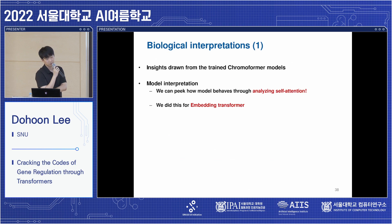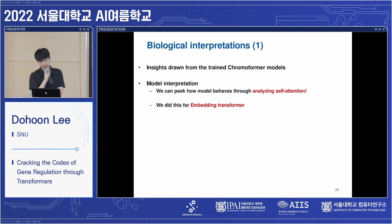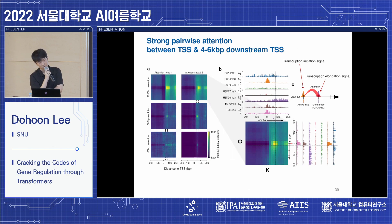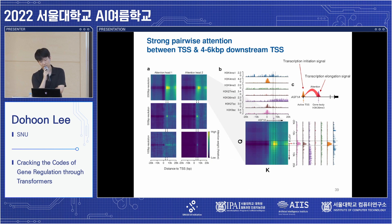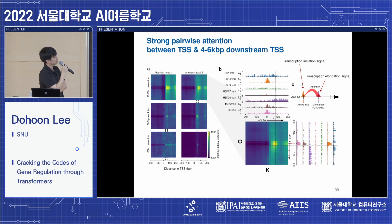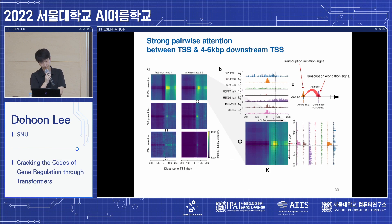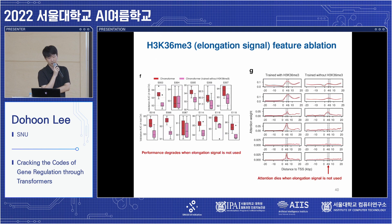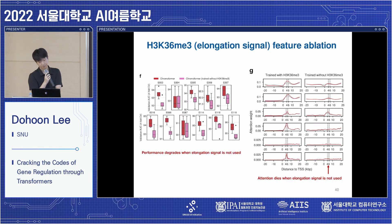I'll now give some biological insights drawn from model interpretations. We analyzed the self-attention weights of the embedding transformer and observed that the transcription initiation signal — which initiates gene expression — attends to the transcription elongation signal, which accelerates or stabilizes gene expression. This means Chromoformer learned the dependencies between transcription initiation and elongation to predict overall gene expression levels, further supported by removing the elongation signal and observing performance degradation and disappearing attentions.